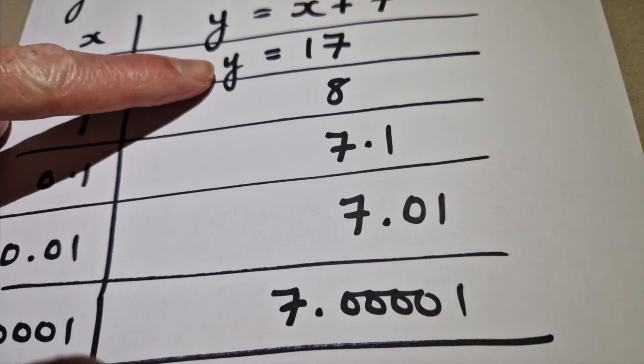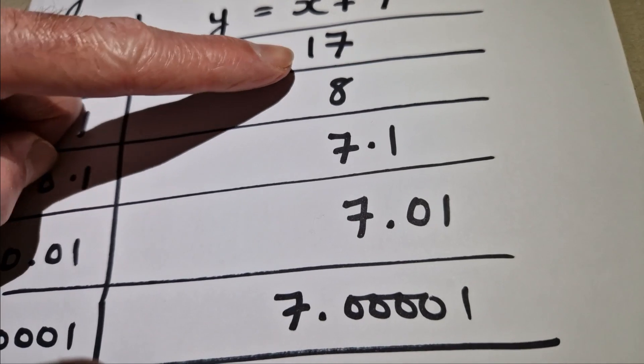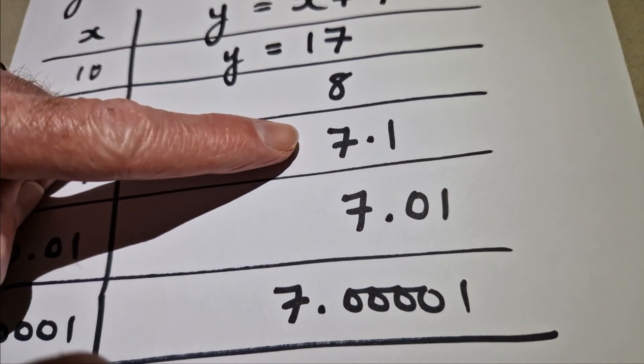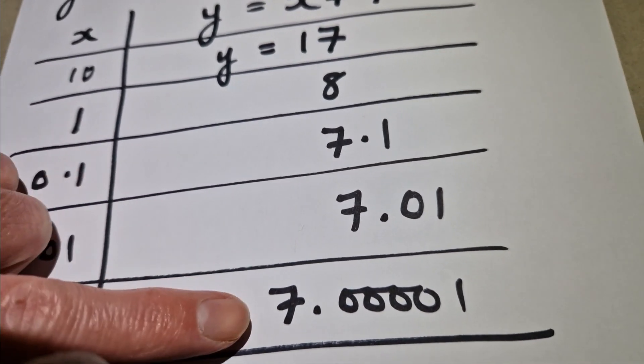What's happening to the value of y as x gets closer to zero? Well, we can see that the value of y is decreasing, but we can see it's also getting closer and closer to the value of 7.